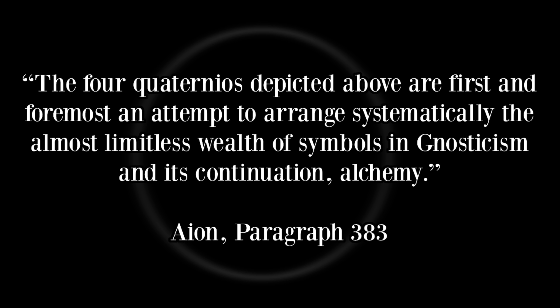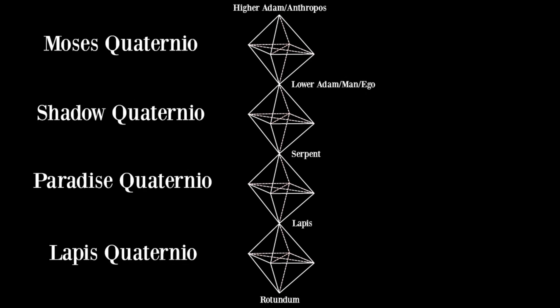These four quaternios are Jung's attempt to arrange systematically the almost limitless wealth of symbols in Gnosticism and, its continuation, alchemy. Jung investigated not only Gnosticism and alchemy but many other religious traditions and found their patterns. He united those patterns through logical inference and brought forward this chain — a chain that portrays the structure and dynamics of the self, or rather, the structure and dynamics the ego must go through in order to attain the self.